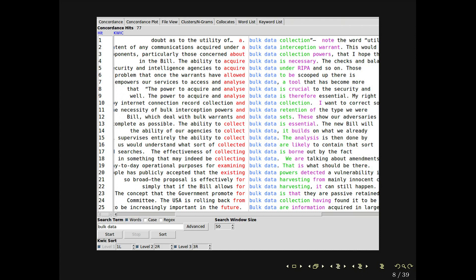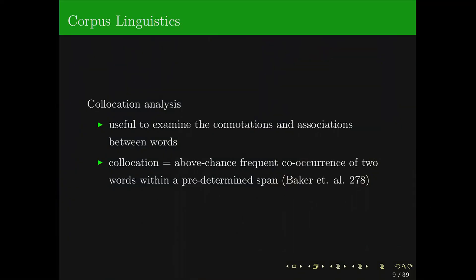You can scroll down and have a look at all the concordances and all the context around the keyword. The second method I used is called collocation analysis, which is very useful to examine the connotations and associations between words. The relation to other words is crucial for understanding the meaning of a word. Collocation is defined as the above-average frequent co-occurrence of two words within a predetermined span — usually around five words to either side of the search term.